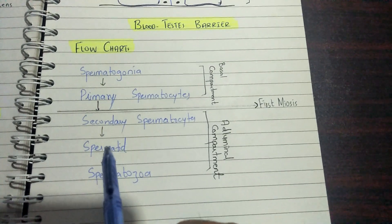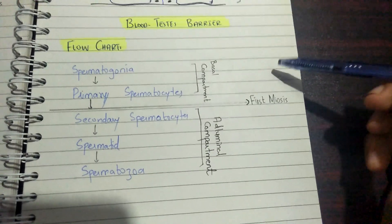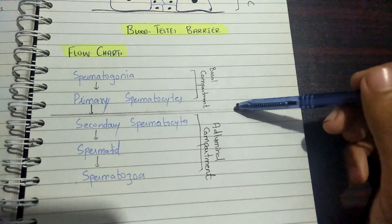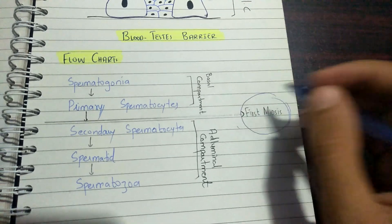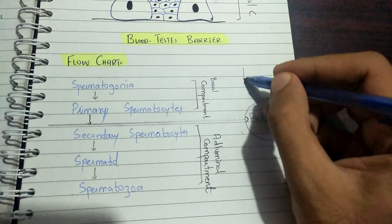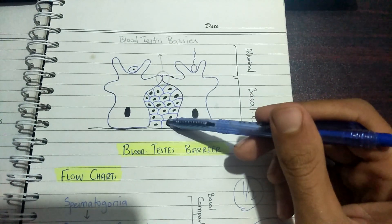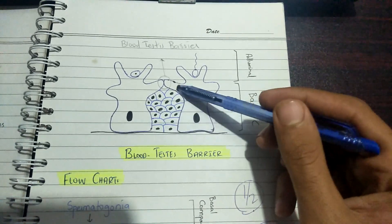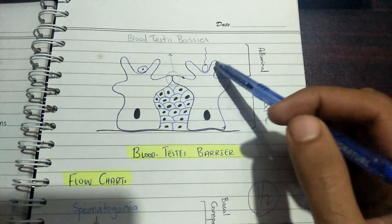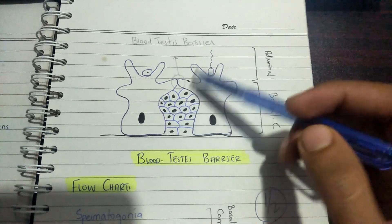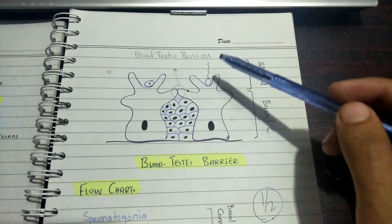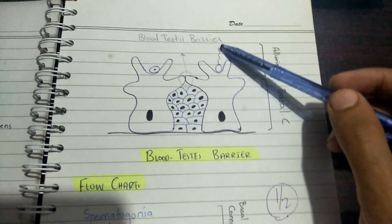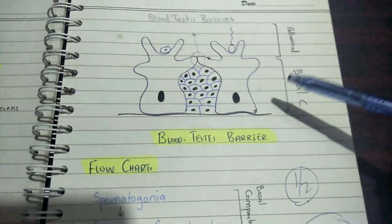The spermatogenesis flowchart goes: spermatogonia → primary spermatocytes → secondary spermatocytes → spermatids → spermatozoa. The blood-testis barrier differentiates the two compartments. The key event at the barrier is the first meiotic division, after which chromosome number becomes half. Primitive sperms are transported from the basal to the adluminal compartment for two reasons: first, to prevent an immunological reaction, and second, to protect them from any blood-borne toxins or drugs that could cause damage and harm to fertilization or pregnancy.